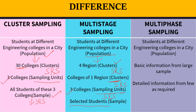In multi-phase sampling, the population is again students at different engineering colleges in a city. But here, basic information is collected from a large sample, and then detailed information is collected from a few as required. Basic information — family background, family income, parents' qualification, home environment — is collected from the large sample. Detailed information, such as whether parents are in the same background or different, whether they are highly qualified or not, is collected from a few selected students within that sample.